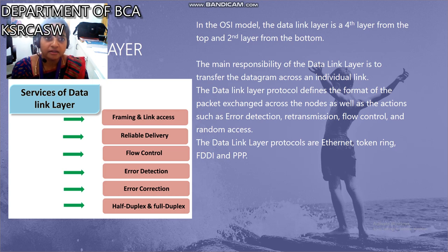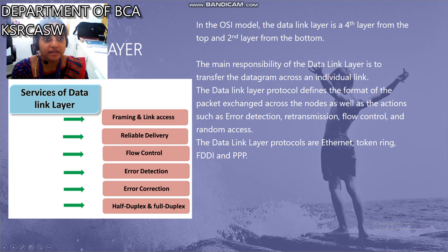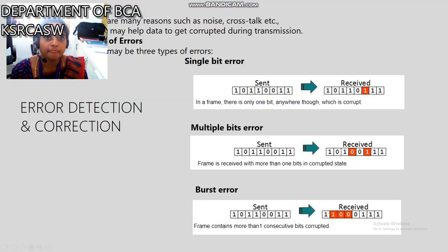Next, the services of the data link layer — there are many services. The first is framing and link access, the second is reliable delivery, the third is flow control, the fourth is error detection, the fifth is error correction, and the sixth is half duplex and full duplex.